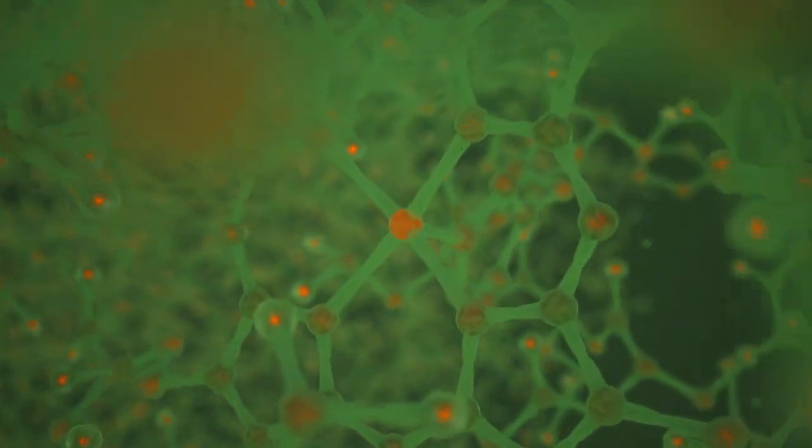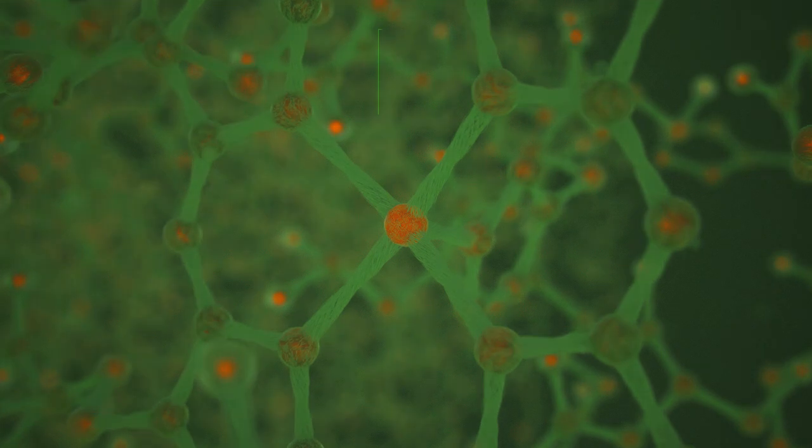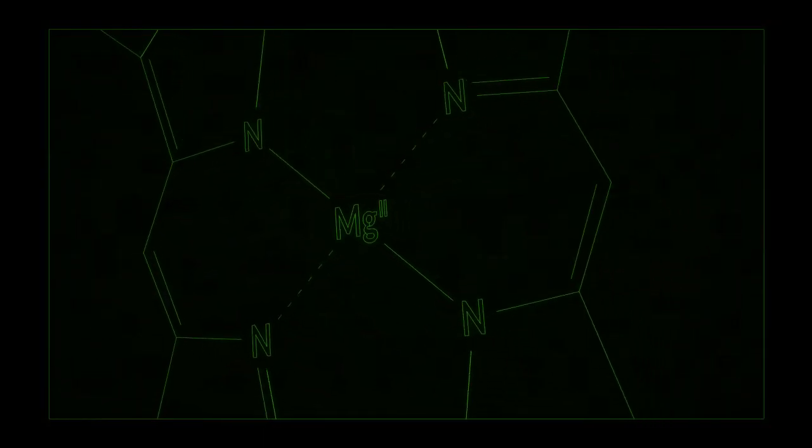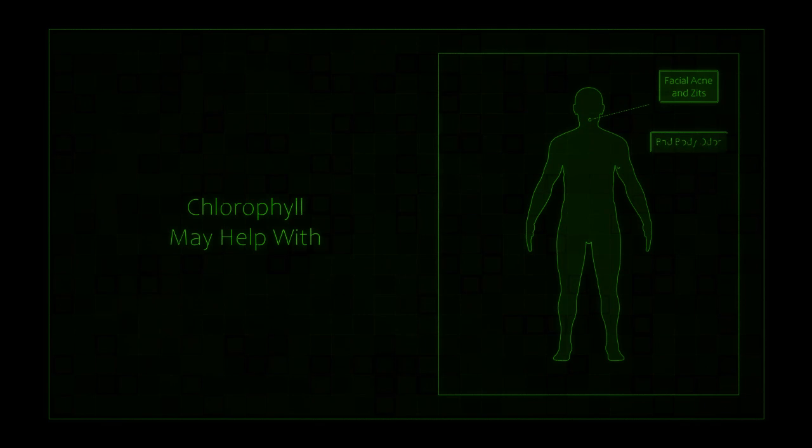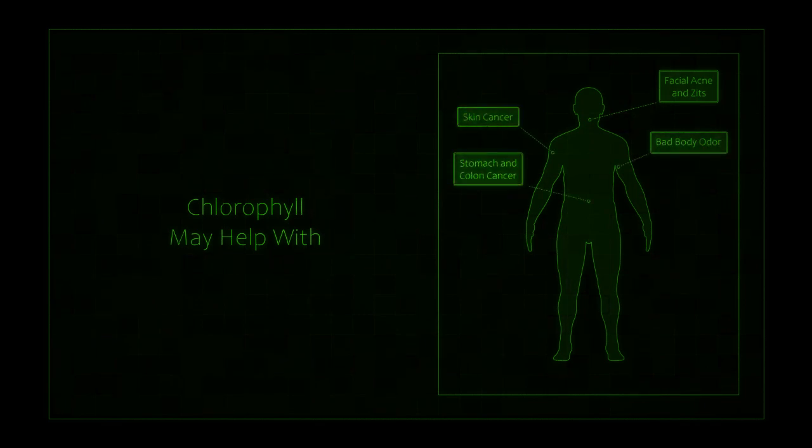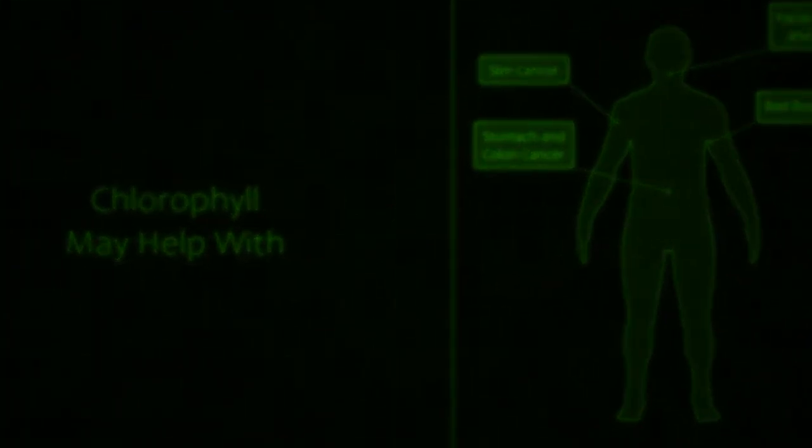The green plant pigment, chlorophyll, is also found here. It is amazingly similar in structure to hemoglobin, which makes up large parts of our blood. Where magnesium is found in chlorophyll, iron is found in hemoglobin. Studies on chlorophyll show positive effects on blemished skin and acne. In addition, chlorophyll is said to show amazing effects on various types of cancer.